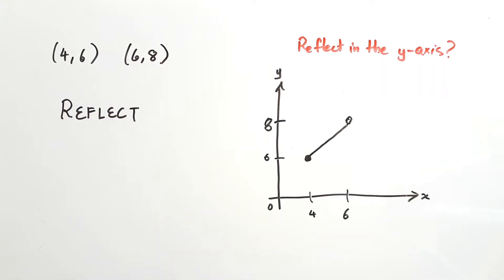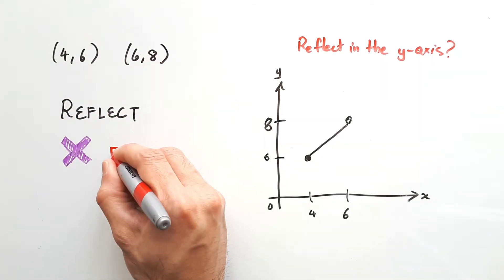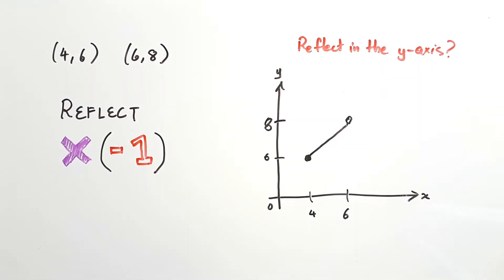Just like dilations, reflecting also multiplies, but it strictly multiplies negative 1 and nothing else. This also depends on the axis being referred to, so let's see how this works with our two points.